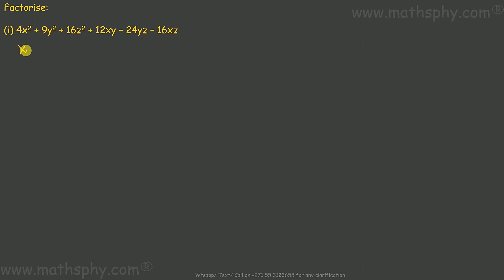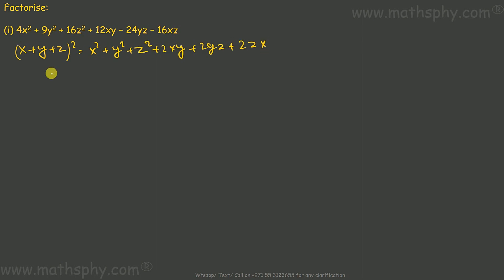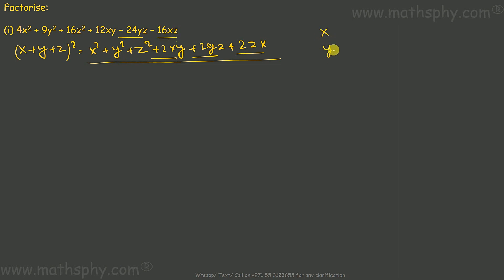If I write this identity as (x + y + z)², it gives me x² + 2x² + 3y² + 3z² and then 2xy, 2yz, 2xz. But the difference between this identity and our expression is that we have all these terms here positive, whereas we have two of the terms here negative.